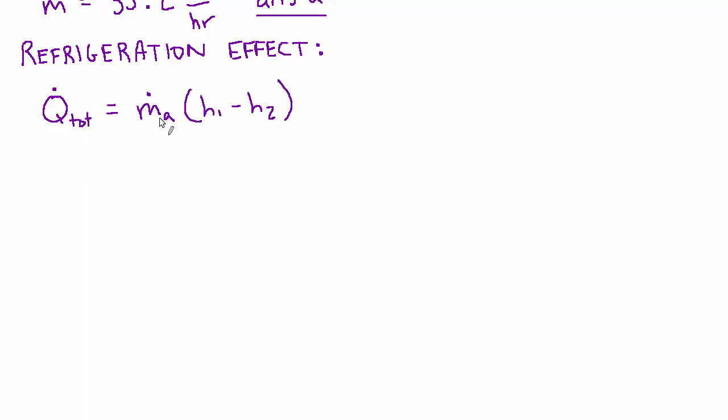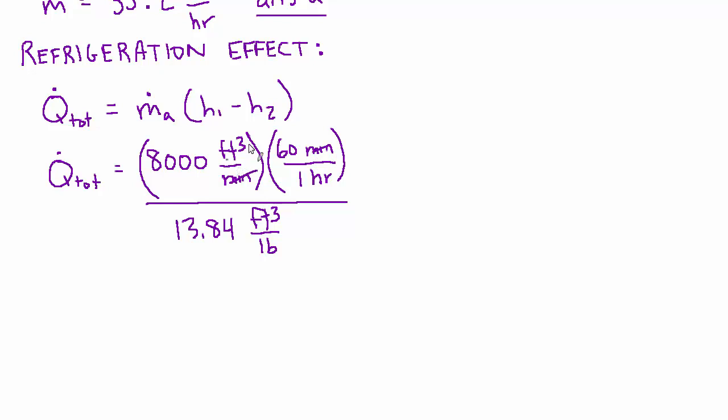And the mass flow rate of air term is going to look very similar. It's the exact same term as we had above. Let's show it all again for completeness. So that's 8,000 cubic feet per minute times the 60 minutes per hour divided by the specific volume 13.84 cubic feet per pound. And we lose minutes and we lose cubic feet. And then we're multiplying by the difference of those two enthalpies that we looked up before. H1 was 31.18 BTU per pound, and H2 is 24.43.